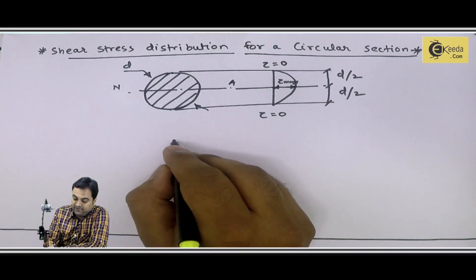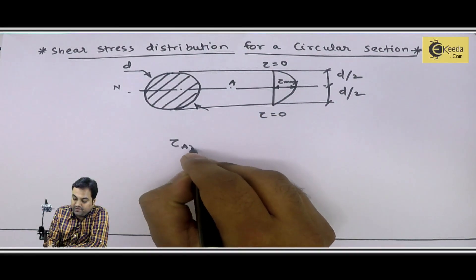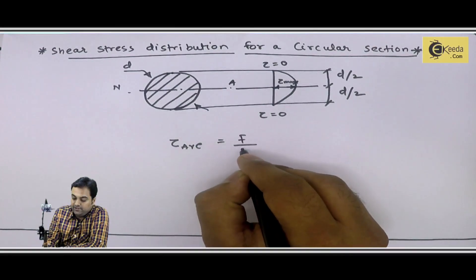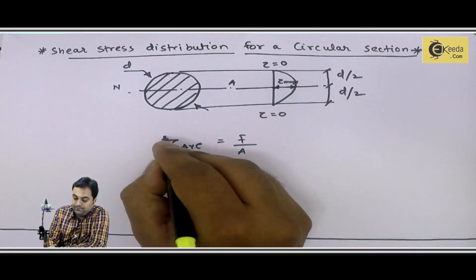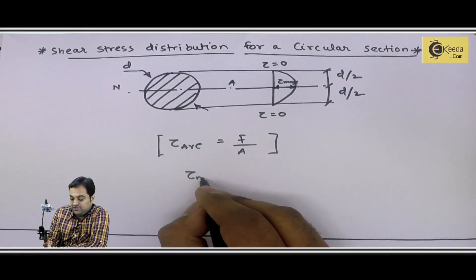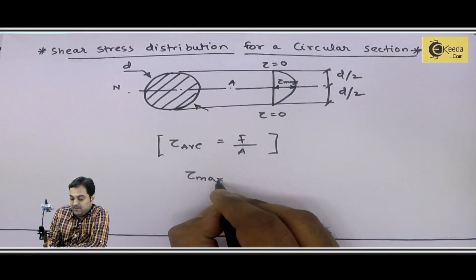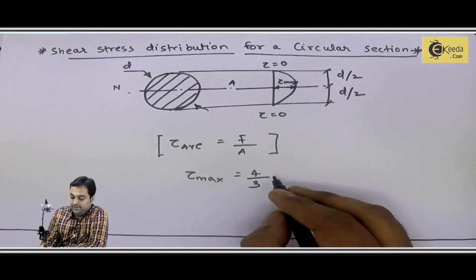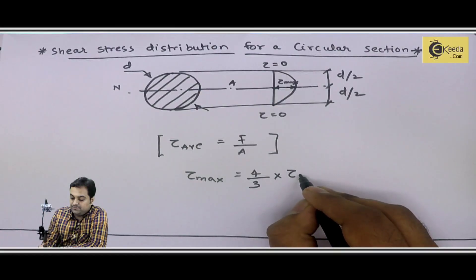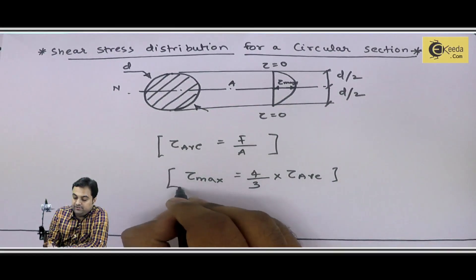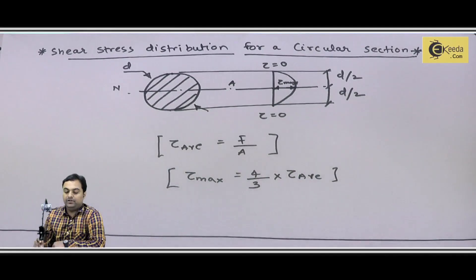The maximum shear stress occurs at the center. Average shear stress is given by the same formula: shear force upon area. Maximum shear stress equals 4/3 times the average shear stress.